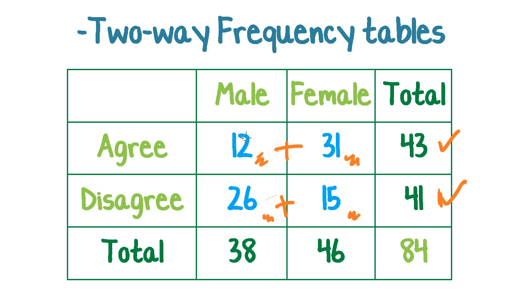And then you total going down as well. So, here we have 12 plus 26 going down this way gives us this total. And this total in the corner, 84, should be these two added together, which should also be, if you've done it correctly, these two added together.